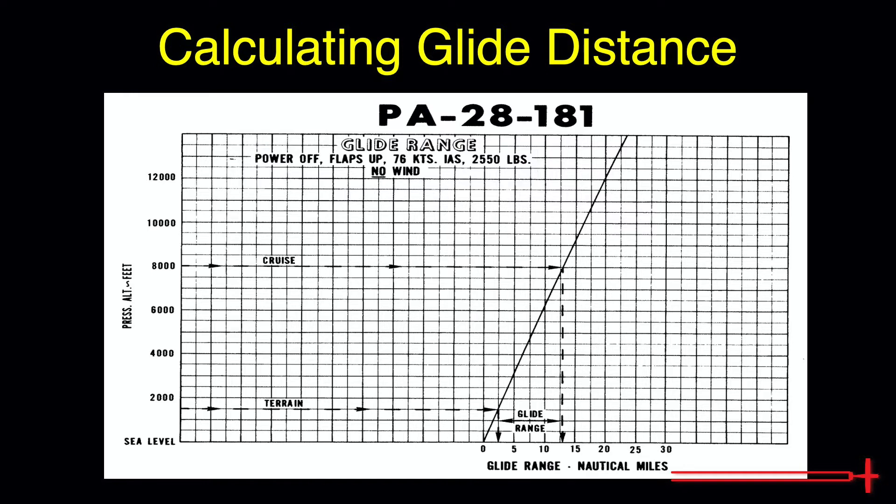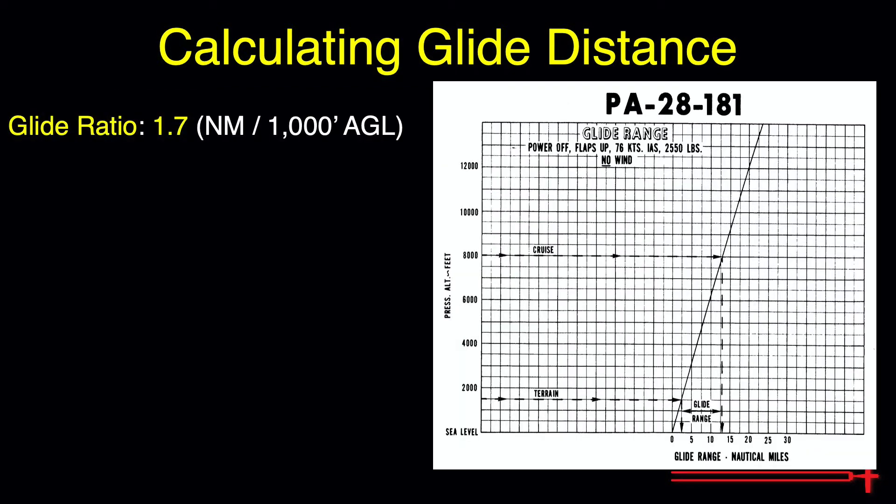Our glide ratio is the distance we can expect to cover per thousand feet we descend. At a height of 10,000 feet, we expect a glide distance of about 17 nautical miles. Based on this information, we expect a glide ratio of roughly 1.7 for this aircraft.